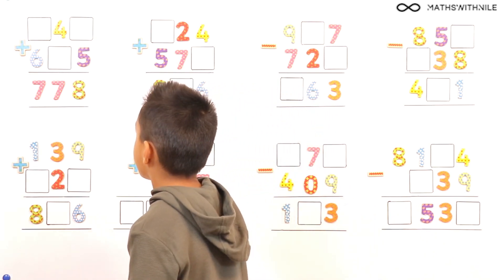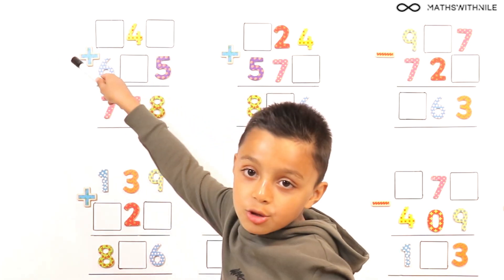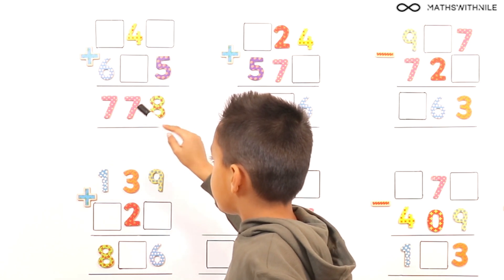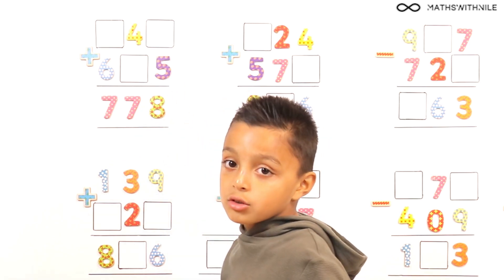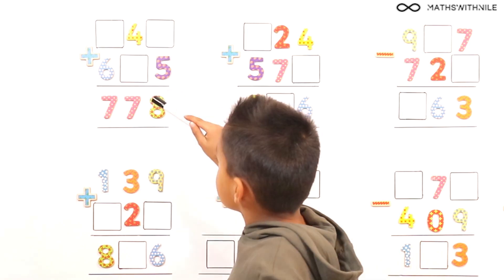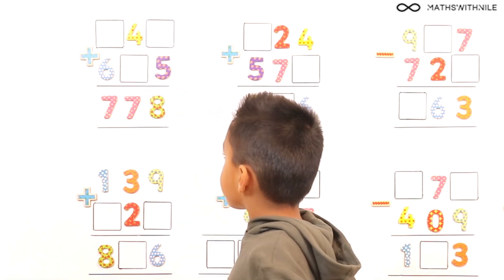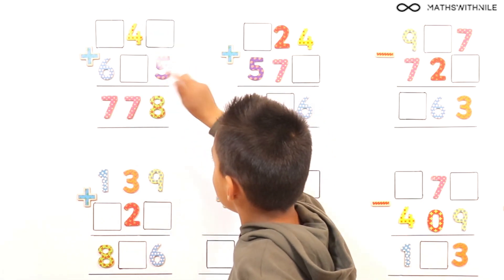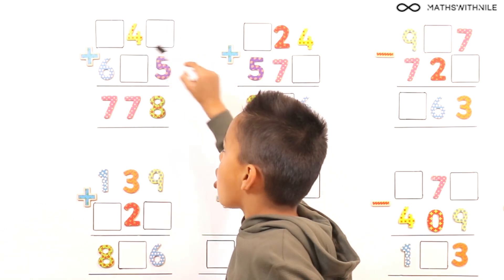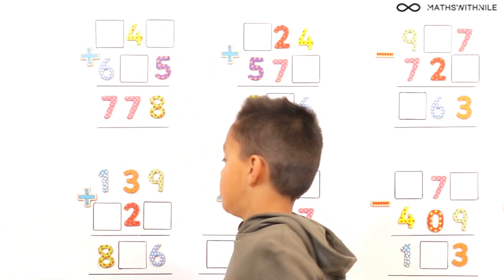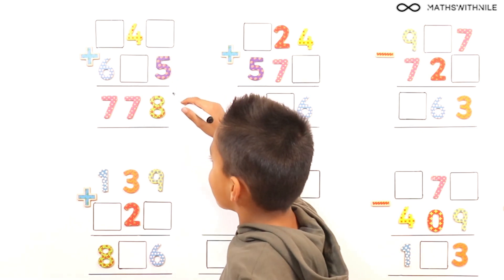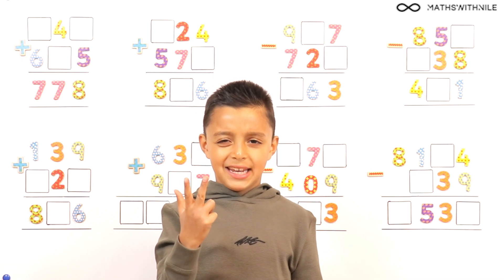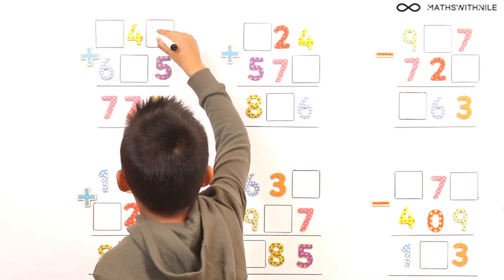So this is addition we're starting with. It has to equal 778. And what column do we start in? Always the units column. So let's start with the units. What plus 5 equals 8? 5, 6, 7, 8 — that would be easy. 3. Good. 3.